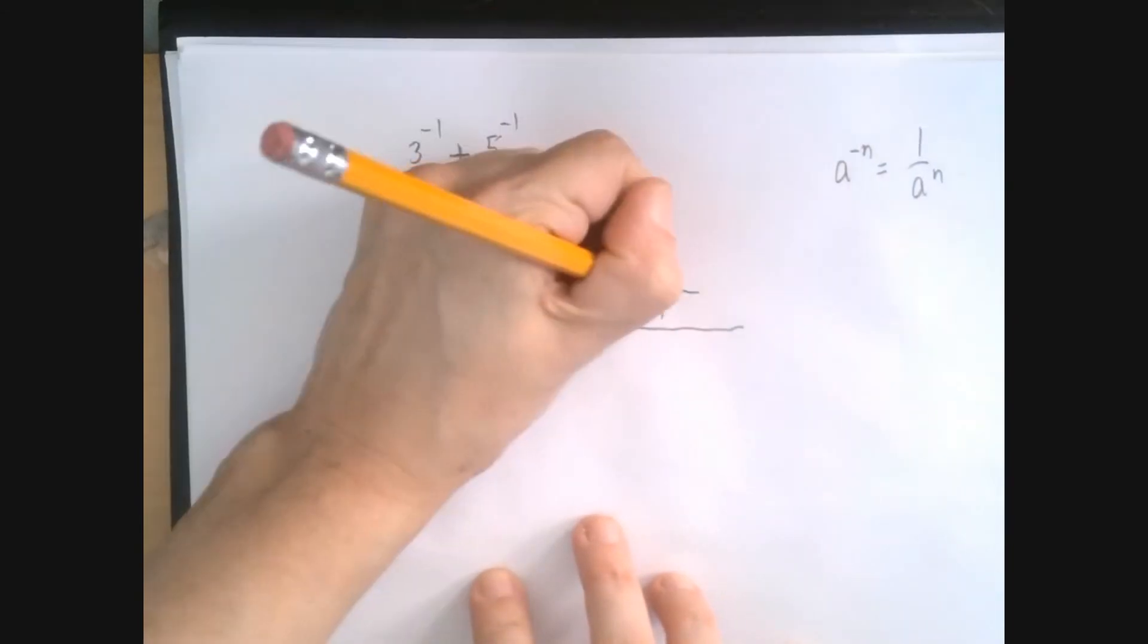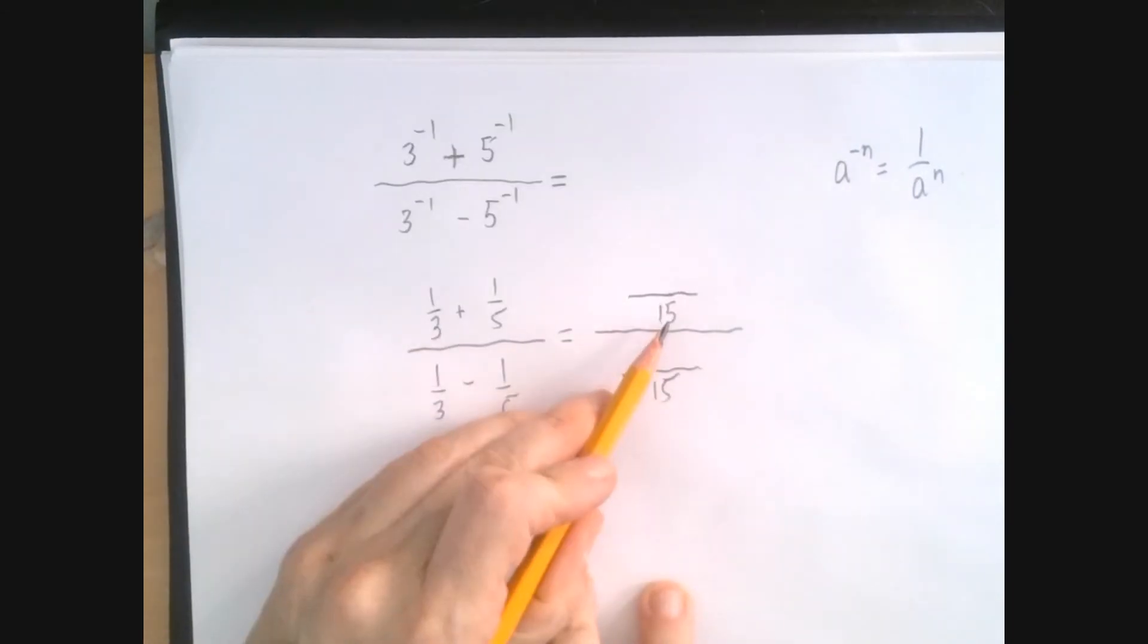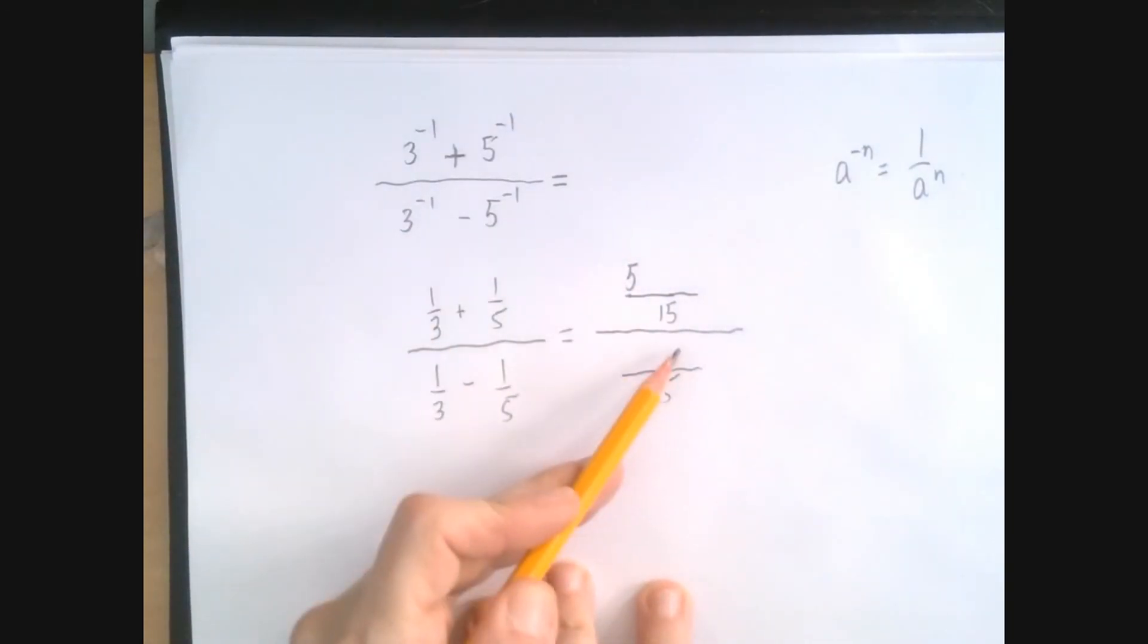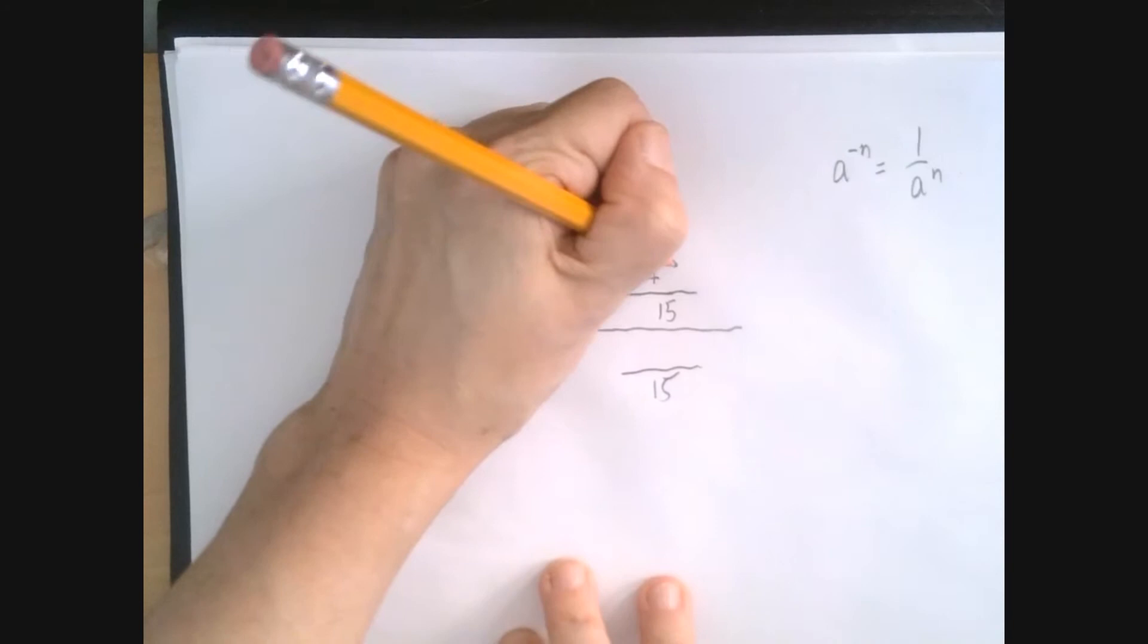So the common denominator is 15. 3 to 15, that was 5. So we have to multiply the top by 5. 1 times 5 is 5. And indeed, 5 over 15 is 1 third. Similarly, 5 to 15, that was multiplication by 3. 1 times 3 is just 3.